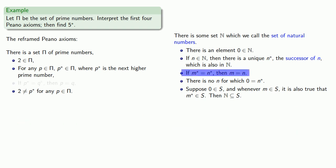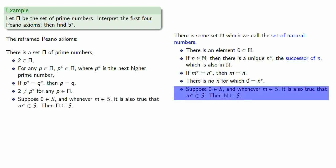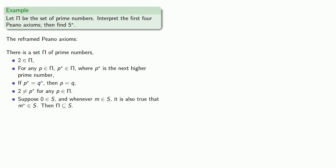The third Peano axiom doesn't have to change, nor does the fifth. And finally, how about five*? So remember, * is the next higher prime number. And since five* is the next higher prime, then five* is equal to seven.